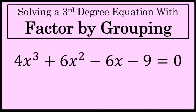Solving a third-degree equation with the factor-by-grouping method can be accomplished in five steps. In this video, I'll discuss those five steps, and as I do, I'll perform the steps on the equation 4x to the third plus 6x squared minus 6x minus 9 equals 0, to find this third-degree equation's three solutions. Let's begin.